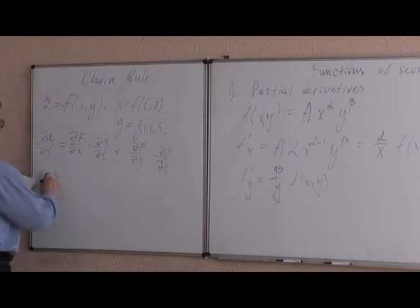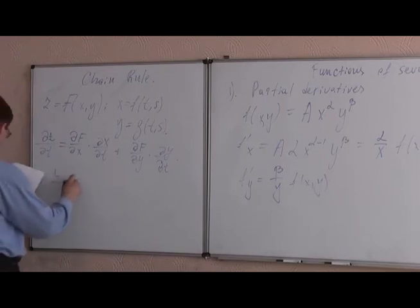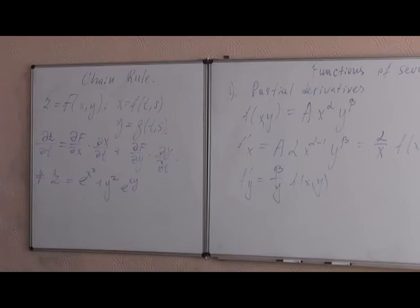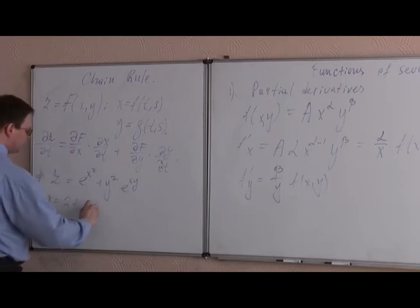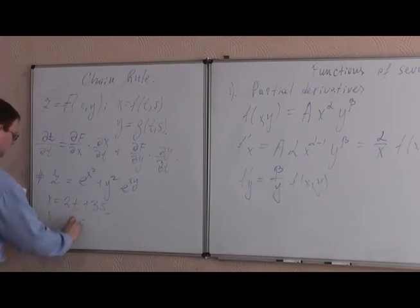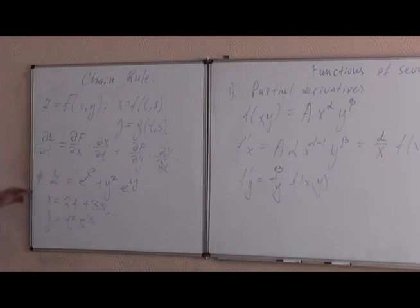And the last example as a whole task is z is something like e to the power of x squared plus y squared e to the power of xy, and we know that x is something like 2t plus 3s and y is t squared s cubed. So we substitute all of this into this formula so that we can find something like dz over dx. Again, this is very straightforward, I wouldn't like to waste a bunch of your time for that, just plug everything into the formula and you get the answer.